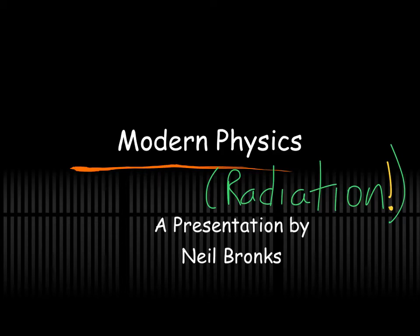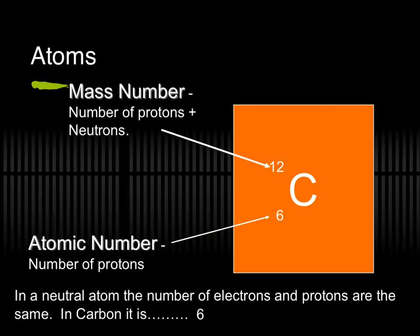To really come to grips with modern physics, we need to talk about radiation. Atoms: the top number, the bigger number, is called the mass number — that's protons plus neutrons, the total number of nucleons in the nucleus. The atomic number is just protons, because if you change the number of protons you change the element. Carbon has six, nitrogen has seven, oxygen has eight.